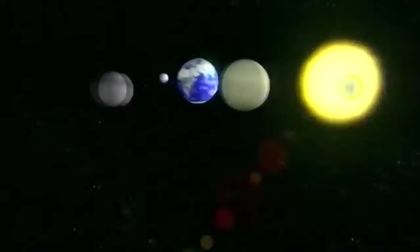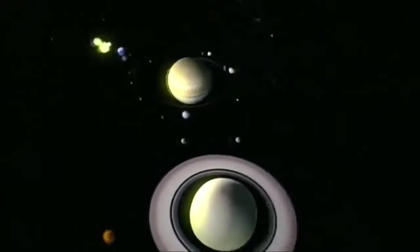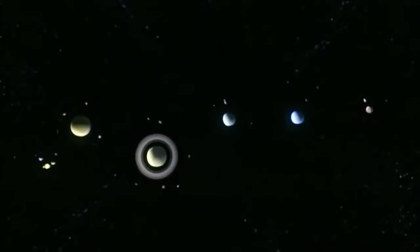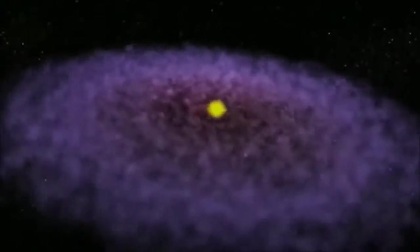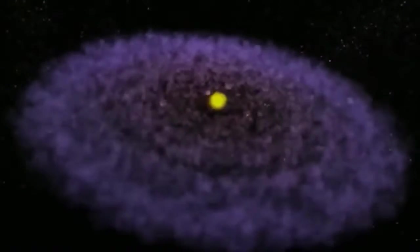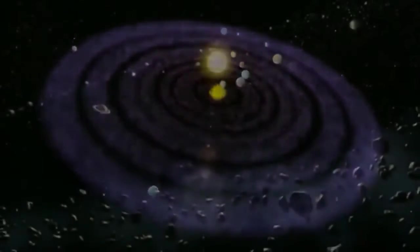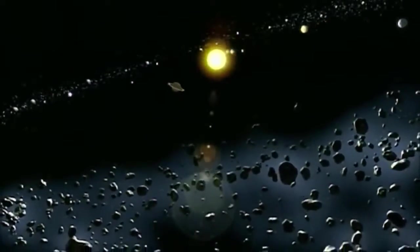Pulsar planets shed startling new insight into the formation of solar systems throughout the universe. If the pulsar planets formed after the supernova explosion, then they're important because they indicate that planet formation can happen in rather extreme, unexpected environments. But if the planets were there before the explosion and remained bound to the star, that's an interesting challenge to theory as well, because it shows that somehow planets can remain bound in some cases.